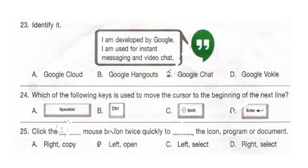Question 23: Identify it. I am developed by Google. I am used for instant messaging and video chat. Look at this logo and select your answer. The correct answer is option B, Google Hangouts. Question 24: Which of the following keys is used to move the cursor to the beginning of the next line? The correct answer is option D, Enter key.